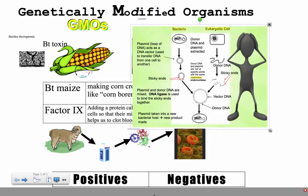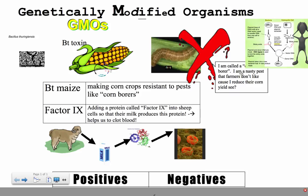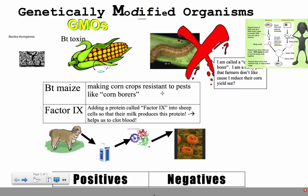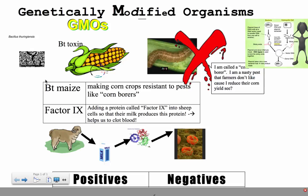We're going to look at two specific examples. There are many others, but be prepared to talk about two of them. Probably the most famous example is BT maize — maize as in corn, and BT referring to a type of toxin: BT toxin, produced by a bacteria called Bacillus thuringiensis.